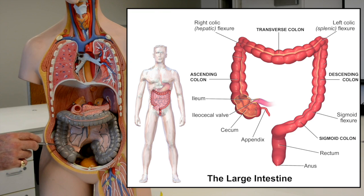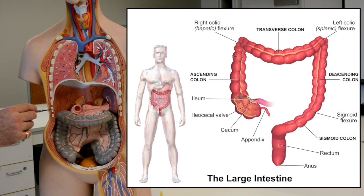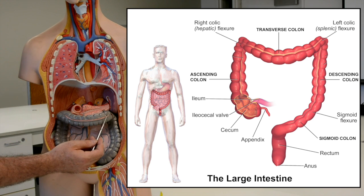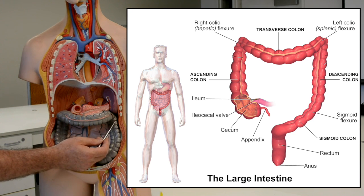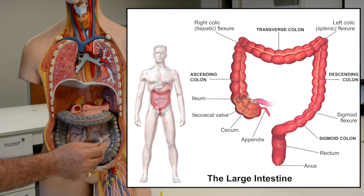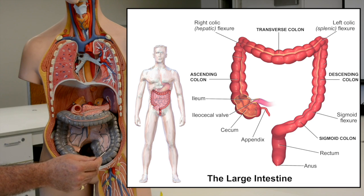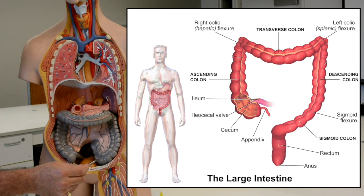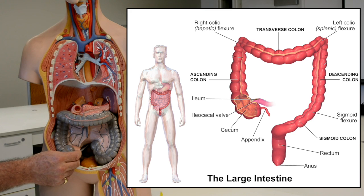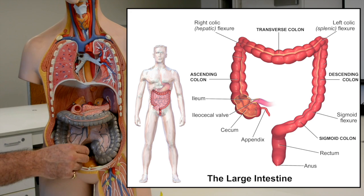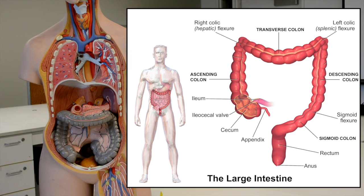Then we have the ascending colon, the right colic flexure, the transverse colon, the left colic flexure, the descending colon, then we have an S shape which is the sigmoid colon, then the rectum and out the anus.